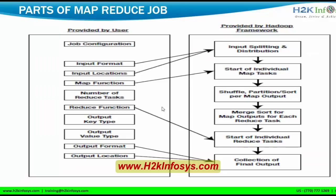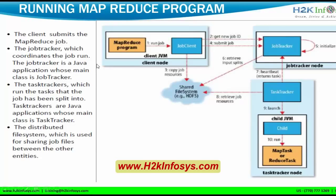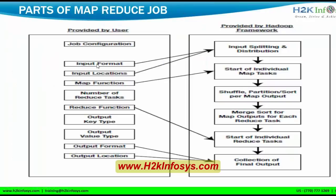If you understand the MapReduce job at a high level: the first thing provided by the user is job configuration. Before writing the MapReduce program, the user decides on the input format and where the input locations are going to be. All this input format and input location will be given to the framework, which will perform the splitting or sorting logic on input splits. Then once divided, the map function starts. The framework takes care of executing the map task — starting individual map tasks — and after the map task finishes, all keys and values are shuffled and partitioned.